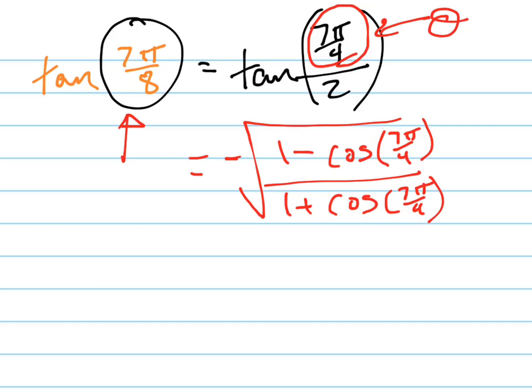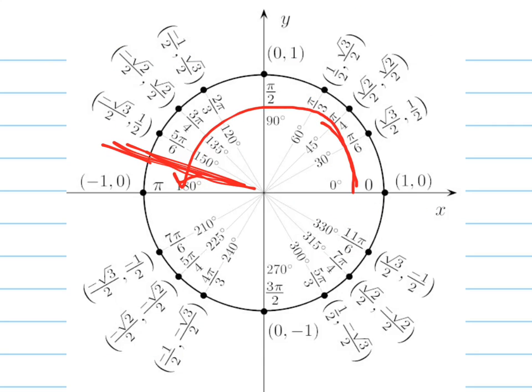And what is the cosine of 7π/4? Well, look at our unit circle in case you don't know that off the top of your head. Here's π/4, 2, 3, 4, 5, 6, 7. There's 7π/4.